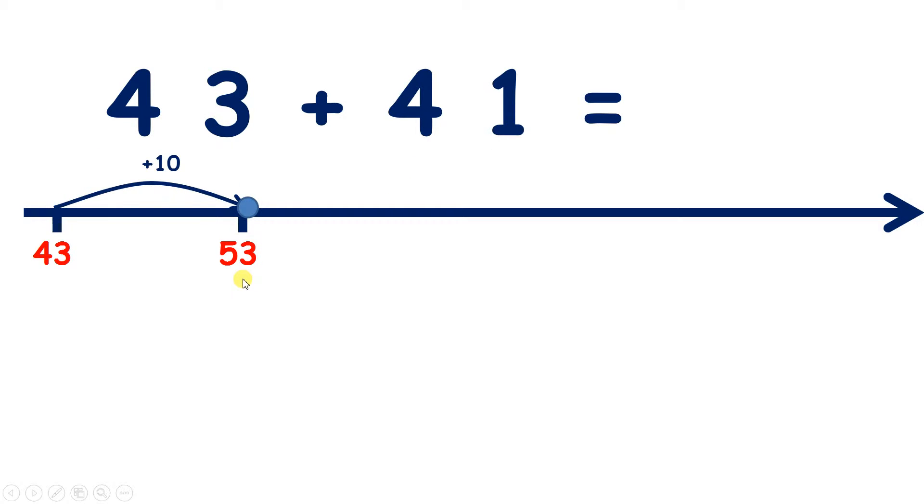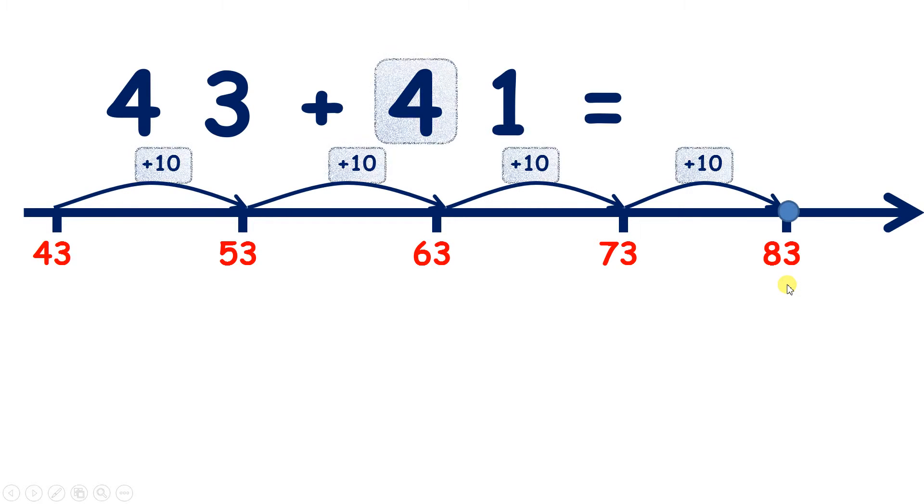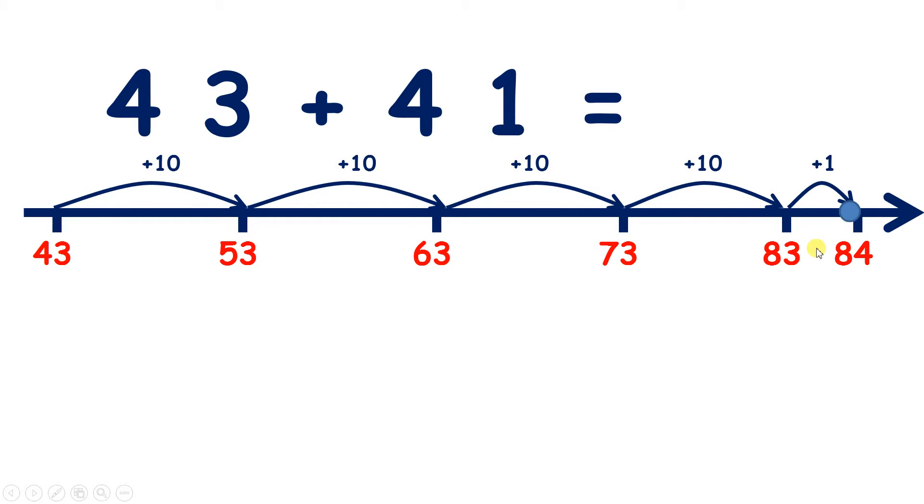So that's one ten, 53. Two tens, 63. Three tens, 73. And four tens takes us to 83. So we've added four tens. We've added ten four times. So now we need to add one unit. So one more than 83 is 84. We've added our one unit. So 43 add 41 is 84.